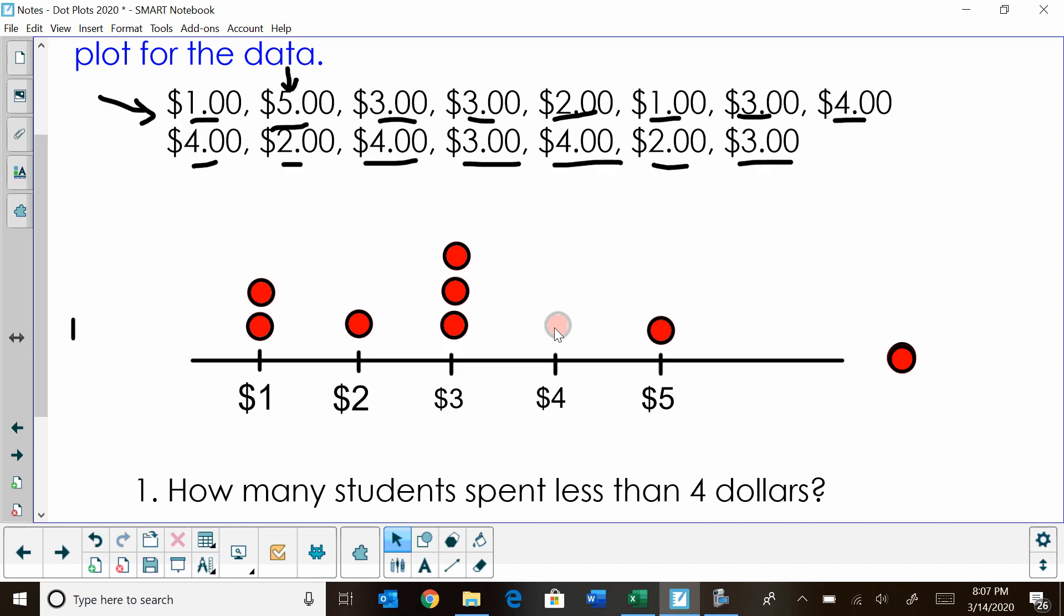And then I'm going to try to line that up nicely. And then $4. Our first student spent $4. And then another $4. They might have come together and bought the same thing. And then this student spent $2. This student spent $4. The next student spent $3. The next student spent $4. The next student spent $2. And the last student spent $3.